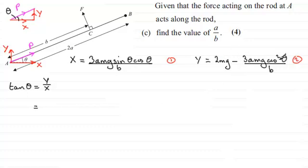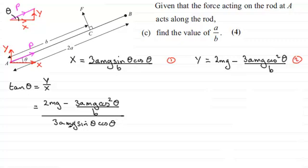OK, so let's just put those values in anyway. Now we've got the Y one then, so we'll put that in as 2MG minus 3AMG cos squared theta divided by B. And then this is all divided by, and then we've got X, which is 3AMG sin theta cos theta, and this is divided by B. Now, in order to tidy this fraction up, because it does look a bit over the top here, I need to get rid of the B here and the B here.